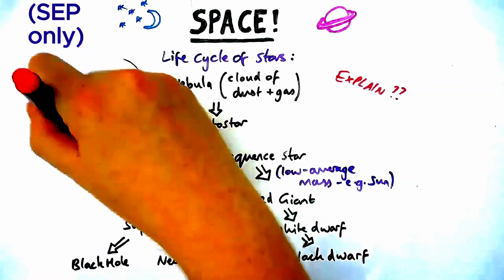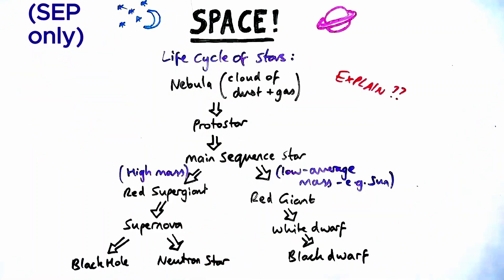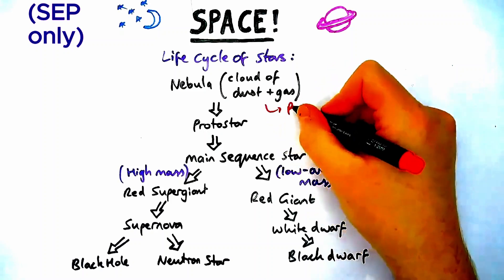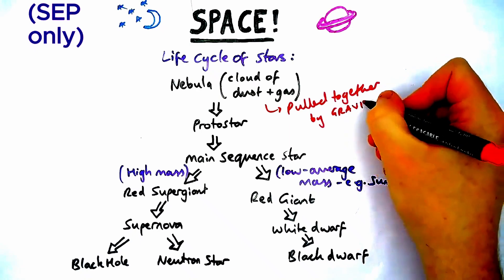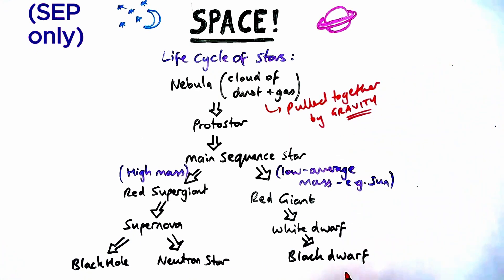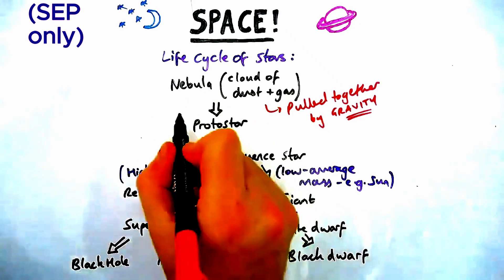In red around the diagram, I'm going to annotate it, which is a good idea to do with your notes. First, how does a protostar form? A nebula or cloud of dust and gas is pulled together by gravity. Even though dust and gas doesn't have much gravity, enough of it gets pulled together over millions of years.